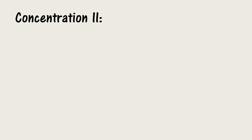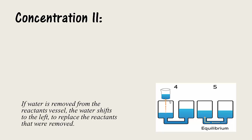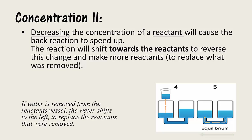The second concentration effect is to decrease the concentration of a reactant. Looking at the jars again, this time we're going to remove some water from the reactants jar, which represents decreasing the concentration of a reactant. If water is removed from the reactant jar, the rate of the back reaction will increase, and water will shift from the right container towards the left container to replace the reactants which were removed — in other words, to replace what was removed.